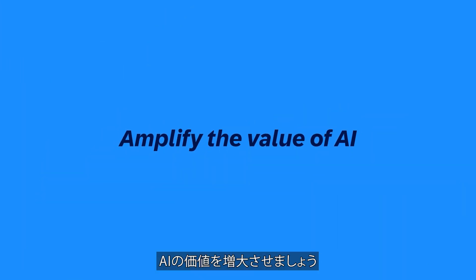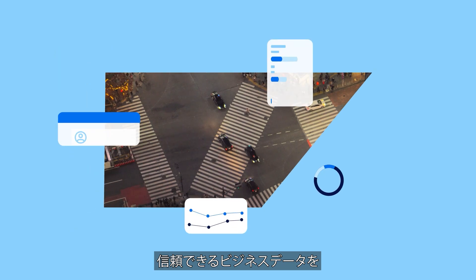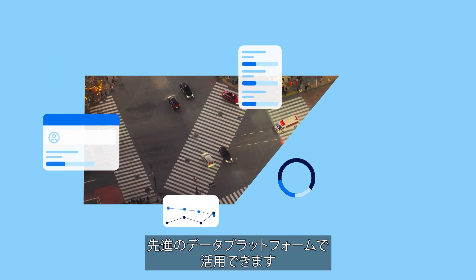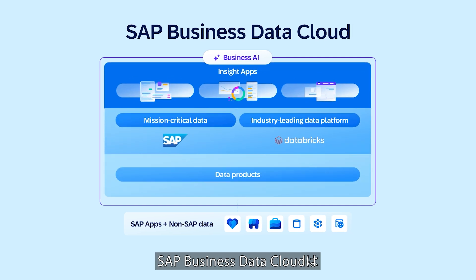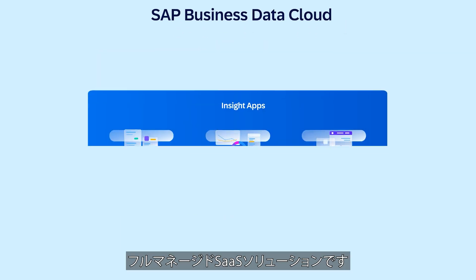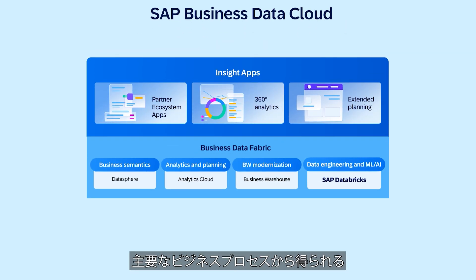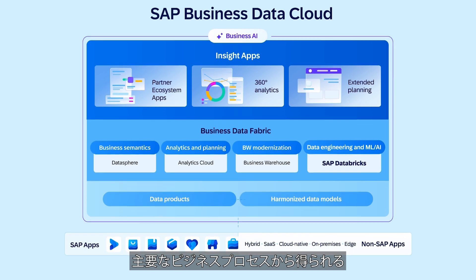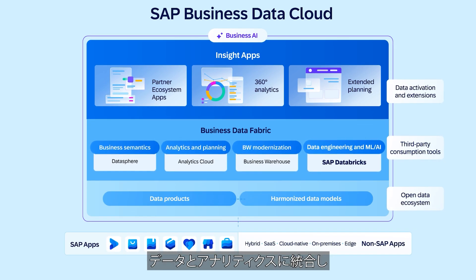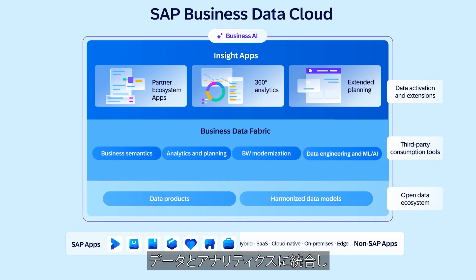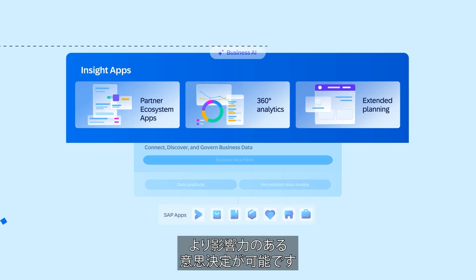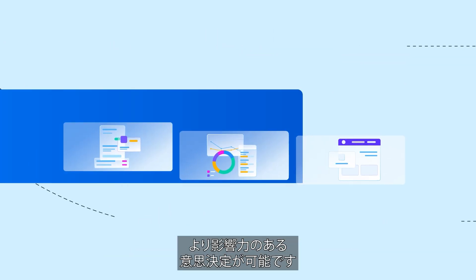Amplify the value of AI with trusted business data and the world's leading data platform. Introducing SAP Business Data Cloud, a fully managed SaaS solution that unifies data and analytics with semantically rich data from your key business processes, giving line of business leaders context to make more impactful decisions.